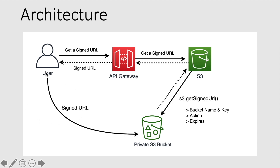We are going to implement this architecture today. The idea is to create a signed URL so a user without AWS credentials can use it to access files — images or videos — in a private S3 bucket. We start by creating an API Gateway so anyone can request a signed URL. The API Gateway calls the S3 service using the getSignedUrl method, passing the bucket name, key, action, and expiration. The result is a signed URL the user can use to directly access the private S3 bucket.